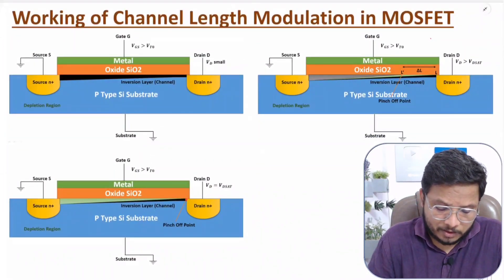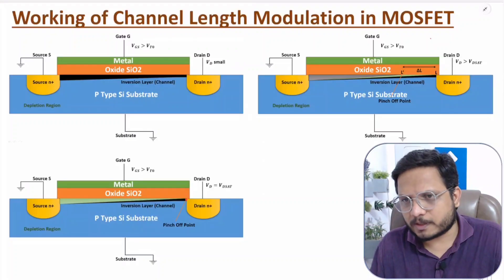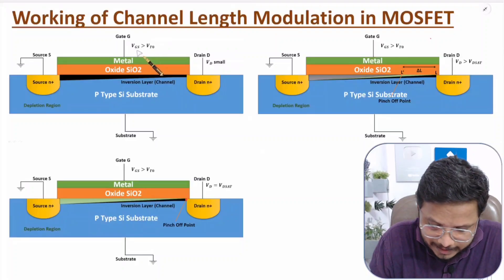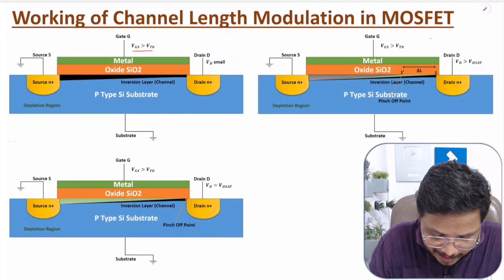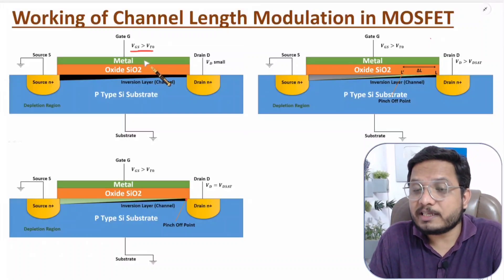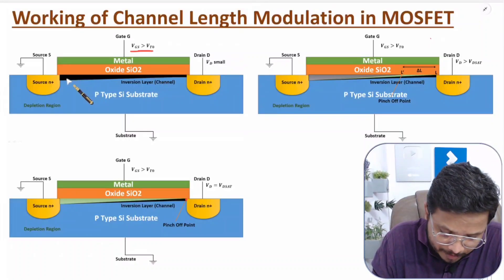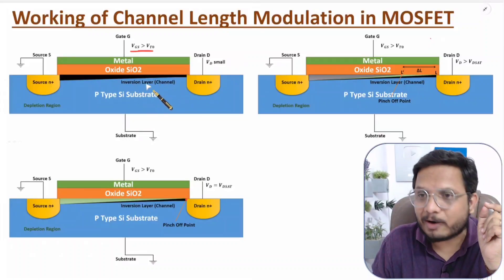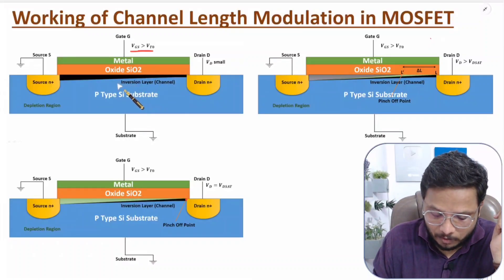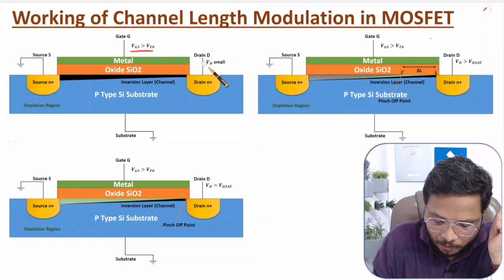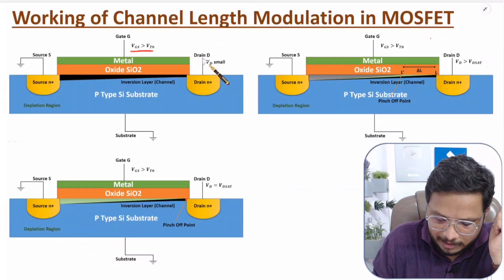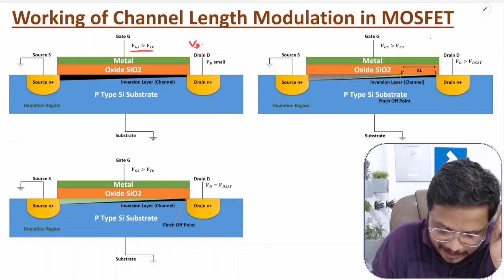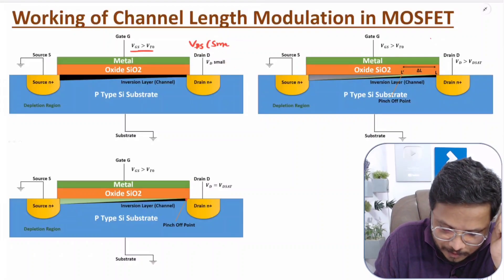First you need to understand basic biasing of MOSFET. Here you can observe that with the gate, we are applying VGS that is greater than VTO. So when VGS is greater than VTO, there will be formation of a channel — also referred to as an inversion layer. Now, if we apply a small VDS voltage at the drain terminal.